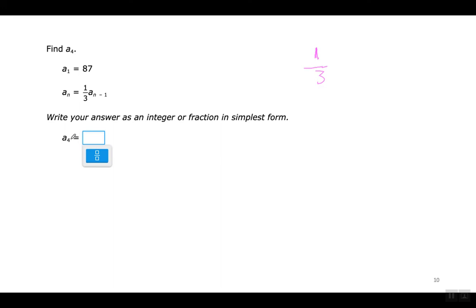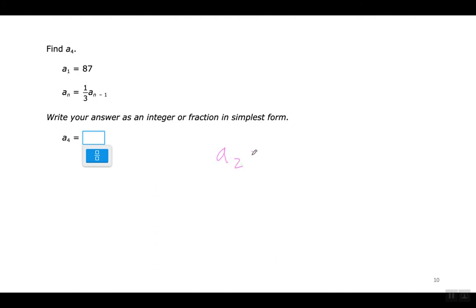They want me to find the 4th term. I can't do it until I find the 2nd and 3rd term first. Para encontrar el cuarto término, primero tengo que encontrar el segundo y el tercero. So the 2nd term is going to be 1 over 3 times the 1st term in the sequence, which is 87. To multiply fractions: change 87 to a fraction by putting a 1 on the bottom — cambien el 87 a una fracción poniendo un 1 abajo. That means the same as 87 divided by 3.